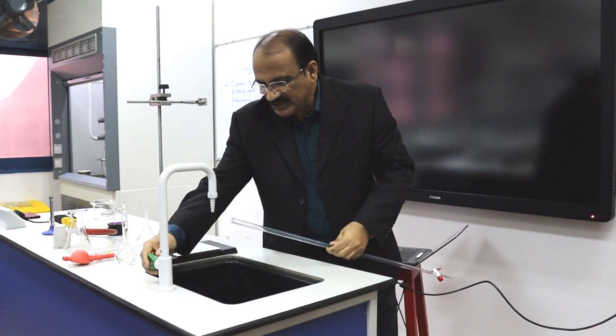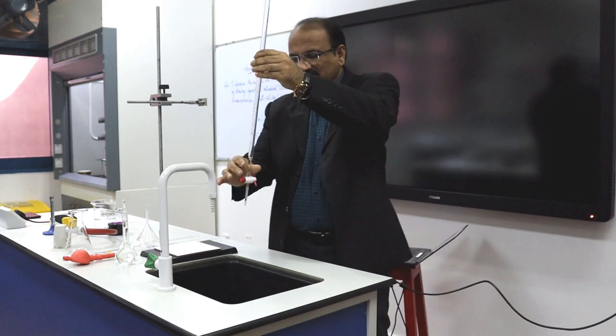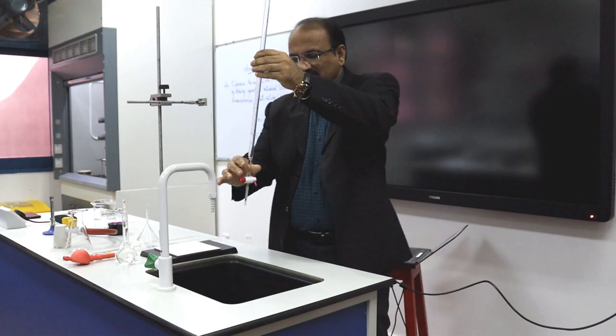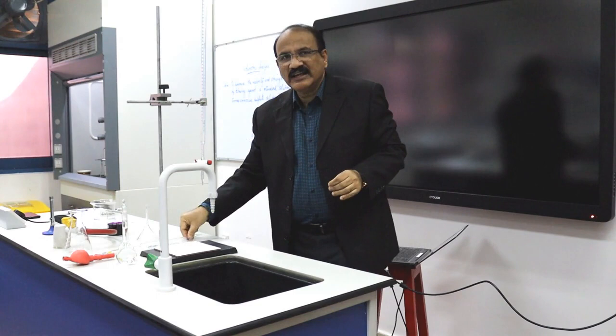We have to wash the burette. For washing the burette, keep it close to the tub. This is the way to wash the burette. Drain the water into the sink. We can clamp the burette onto the burette stand. This is called a burette stand.